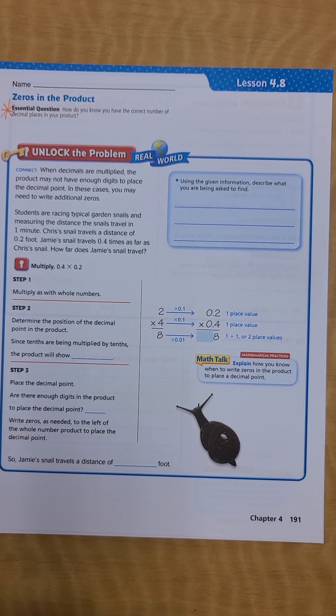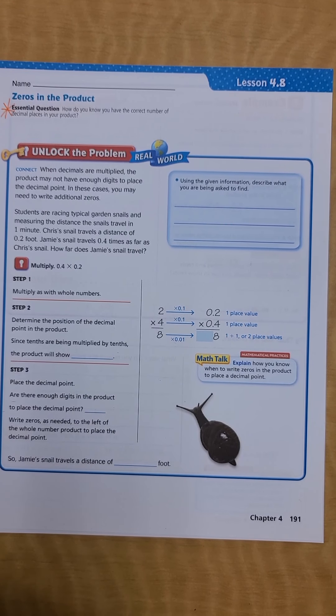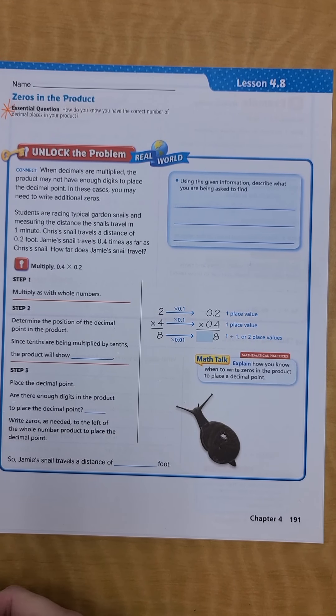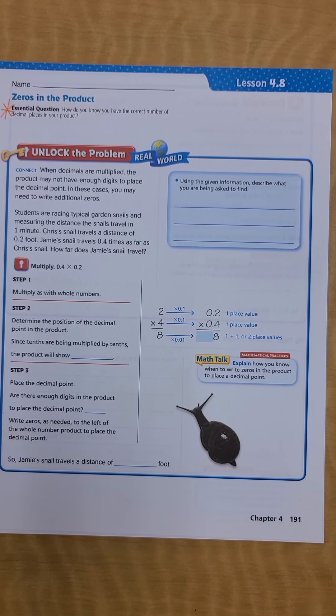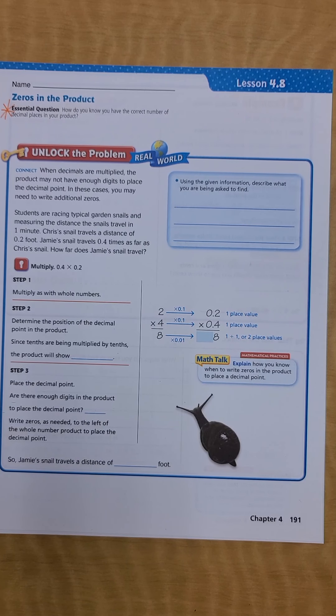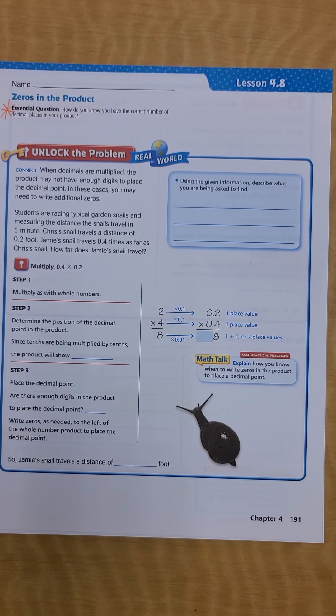We're going to connect what we've been learning to these word problems. When decimals are multiplied, the product may not have enough digits to place the decimal point. In these cases, you may need to write additional zeros. Students are racing garden snails and measuring the distance traveled in one minute. Chris's snail travels a distance of 0.2 foot. Jamie's snail travels four tenths times as far as Chris's snail.